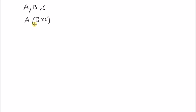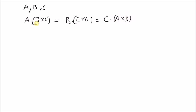An important property of this scalar triple product is that the vectors can be circulated. That is, A dot B cross C is equal to B dot C cross A, which is also equal to C dot A cross B. The vector B becomes the first vector with the cross product defined between C and A, and basically we can move the vectors towards the right, circularly.